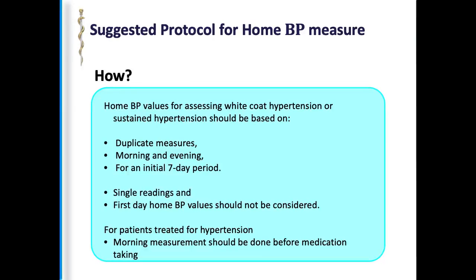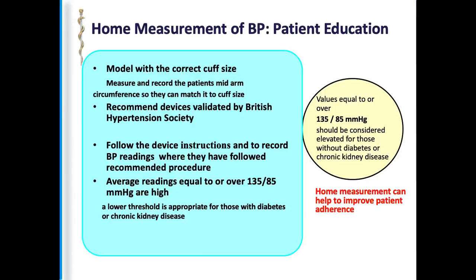Check and standardize values in the morning and evening for at least the initial seven days. Measurements should be taken before medication is taken. Different societies have recommendations — for example, the British Hypertension Society has validated cuff sizes. The mid-arm circumference should match the cuff size. Always read the device instructions for whichever device is being used. If values are more than 135/85, it is abnormal, with a lower threshold for comorbid conditions.